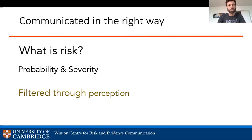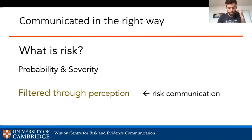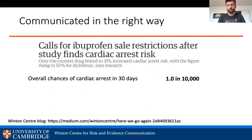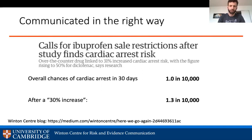Our perception of risk is filtered: we're more scared of shark attacks than heart disease, even though the latter is orders of magnitude more dangerous. We're more scared of coronavirus than climate change, even though the latter will probably kill more people. Risk communication helps perception meet reality with regard to probability and severity. The relative risks here obscure that the cardiac arrest risk is actually quite low — the absolute risk is 1 in 10,000, and a 31% increase brings that only to 1.3 in 10,000.